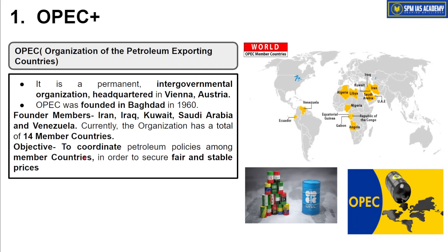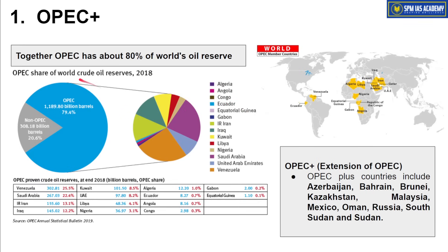The purpose of OPEC is to create coordination between member countries so they can keep crude oil prices fair and stable in the international market. Without coordination, if all countries start producing more oil, prices crash, leading to economic loss for these nations since oil exports are their major source of earnings. 80% of the world's oil reserves belong to these 14 countries.